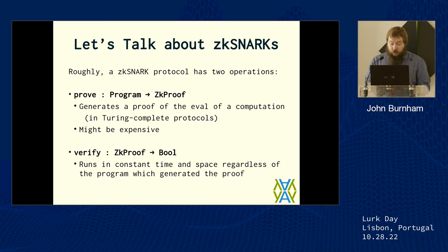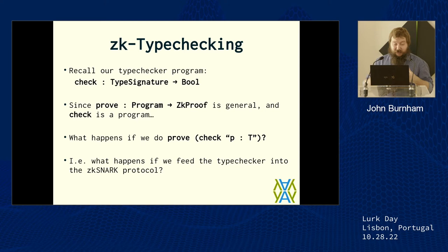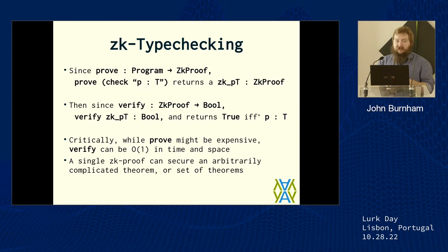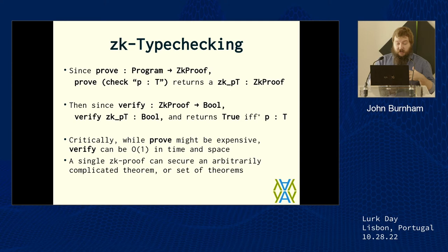Let's remember our type checker program. The key thing about types is that we have an associated program that verifies whether the types actually match some program we're working with. Prove is general over all programs, and check is a program. So what happens when we pass check of some type signature into prove? We get a zero-knowledge proof that our type checker has returned some value. You're writing a Rust function, you have a type signature and an implementation, the Rust compiler says your implementation matches the type signature. In principle, you could take the entire Rust type checker, put it in a zero-knowledge proof system, and get a zero-knowledge proof that Rust has type-checked this program.